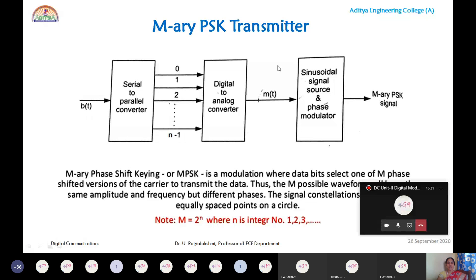The analog signal is then modulated using the corresponding modulator. For PSK, a phase modulator is used. For FSK, a frequency modulator such as a voltage-controlled oscillator or Armstrong method is used. For ASK, a switching modulator or collector modulation method can be used. The output is the M-ary PSK signal, consisting of M symbols.